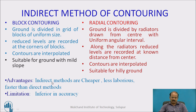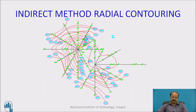The advantages of the indirect method of contouring are that it is cheaper, less laborious, and faster than the direct method. The limitation is that it is inferior in accuracy compared to the direct method. This is a small example of indirect radial contouring — radiators are drawn at 30-degree angular intervals, established on the ground, and at some arbitrary interval the leveling staff is held, readings are recorded, and those values are noted.